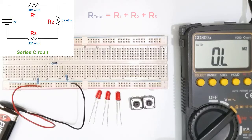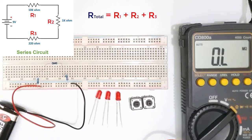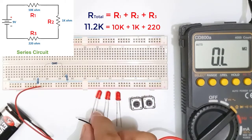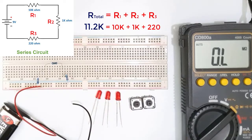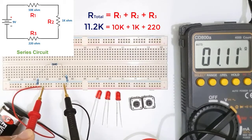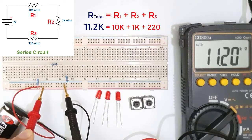The second principle is that the total resistance of any series circuit is equal to the sum of the individual resistances. So if I have 10 kilo ohm, 1 kilo ohm, and 220 ohm resistors in series, the total resistance should be 11.2 kilo ohms. I'll disconnect my battery first, and if I measure the total resistance using this multimeter, I can read 11.2 kilo ohms, which proves our second principle.